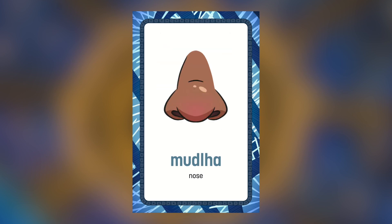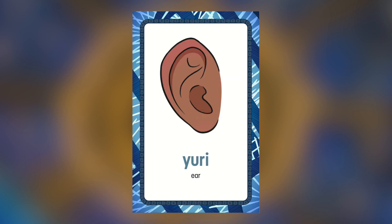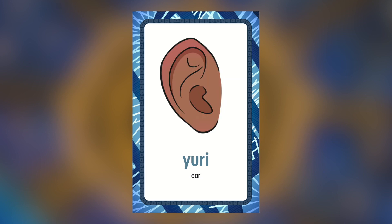And on the face, we have mūdla, which means nose — mūdla. Mīna is eye — mīna. Yuri is ear — yuri. And chin is mūtuwata — mūtuwata.